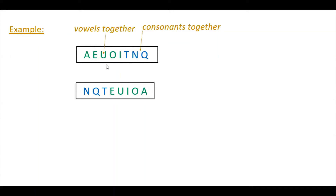Looking at the examples here: vowels are together and consonants are together. You can arrange either vowels first and consonants next, or consonants first and vowels next — but vowels must stay together and consonants must stay together. Within the vowel group you can write them in any order, for example A, E, U, O, I or starting with I or E first. Similarly consonants can be in any order. So it is 2! × 5! × 3!.